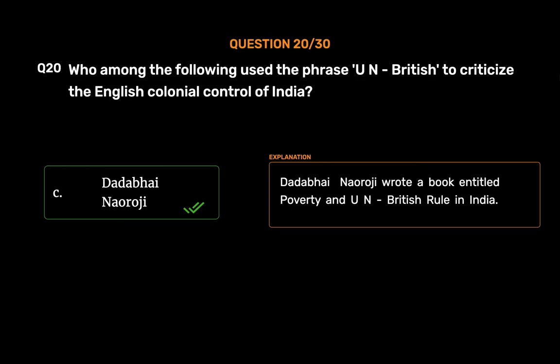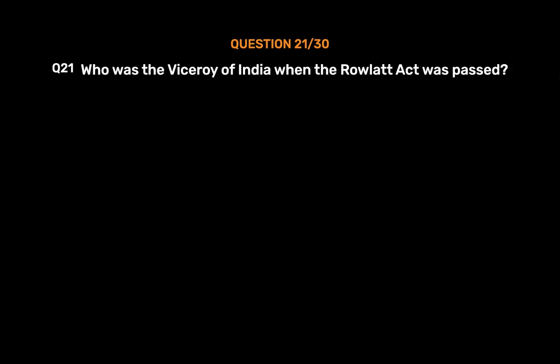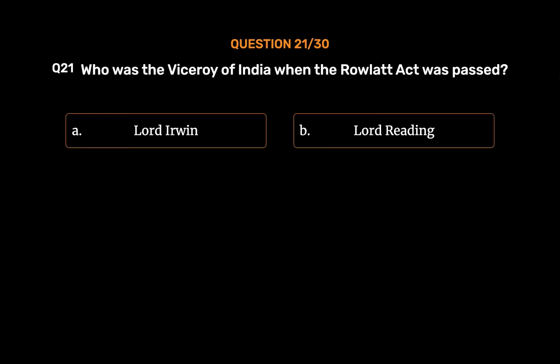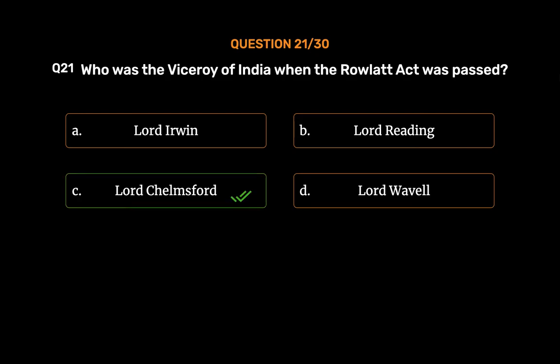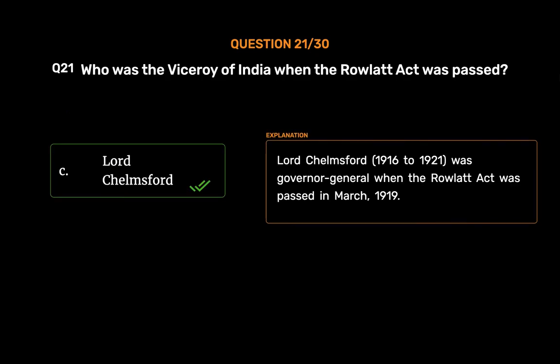Question No. 21. Who was the Viceroy of India when the Rowlatt Act was passed? Option A, Lord Irwin; Option B, Lord Reading; Option C, Lord Chelmsford; Option D, Lord Wavell. The correct answer is Option C, Lord Chelmsford. Lord Chelmsford, 1916–1921, was Governor General when the Rowlatt Act was passed in March 1919.